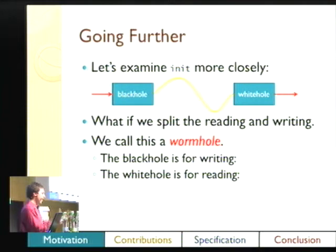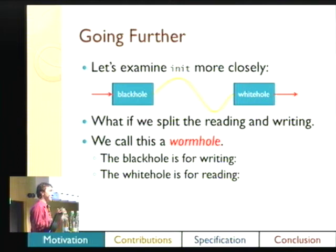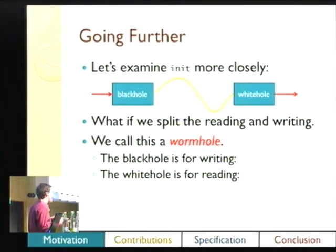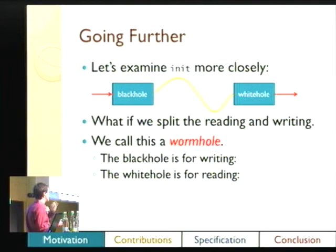We have this structure I call a wormhole. We have one end where we write to — the black hole, because it takes in all the data — and the other end where we read from — the white hole, that produces data. I use a yellow-orange line to connect them because it's not actually through types; it's through some sort of mutation going on behind the scenes. So it's not a typical red line — it's a funky yellow line.